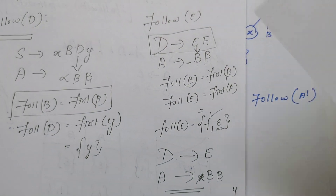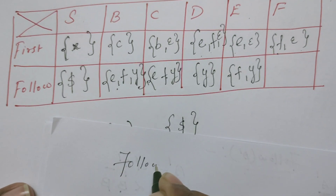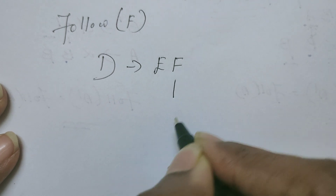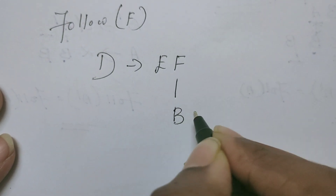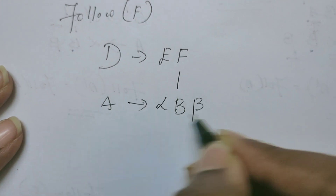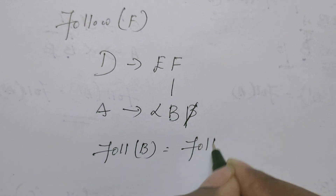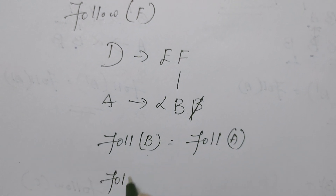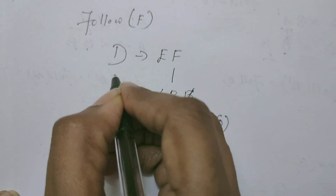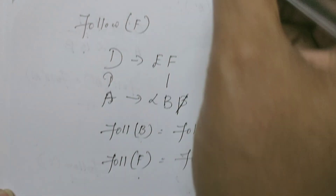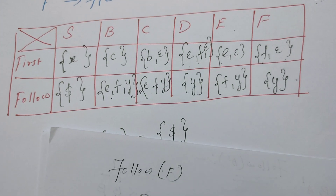Finally, we find FOLLOW of F. The relevant rule is D derives E F. F is at the end with no beta, so by the rule FOLLOW of B equals FOLLOW of A, we get FOLLOW of F equals FOLLOW of D, which is Y. So FOLLOW of F = {Y}.